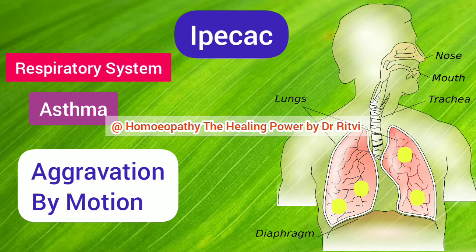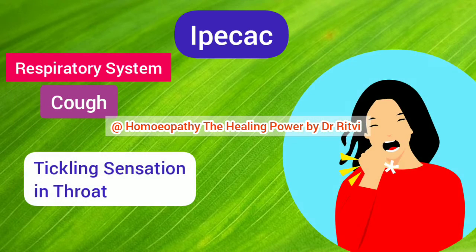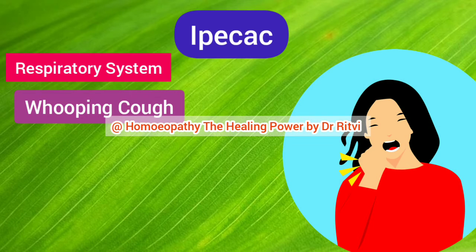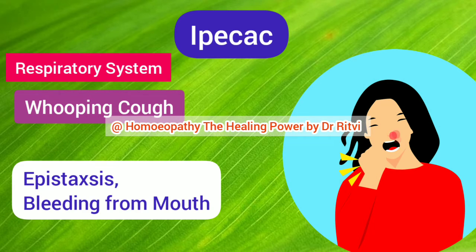Ipecac is also indicated in cough of a spasmodic character, caused by a tickling sensation in the larynx. Nausea and vomiting usually follow the attack of cough. Sometimes the attack of cough is so suffocative that the child becomes blue, faints, and becomes stiff. All these symptoms make Ipecac a very useful medicine for whooping cough as well. In whooping cough the attack of cough is so strong that it sometimes brings epistaxis as well as bleeding from the mouth, and in these conditions Ipecac gives wonderful results.